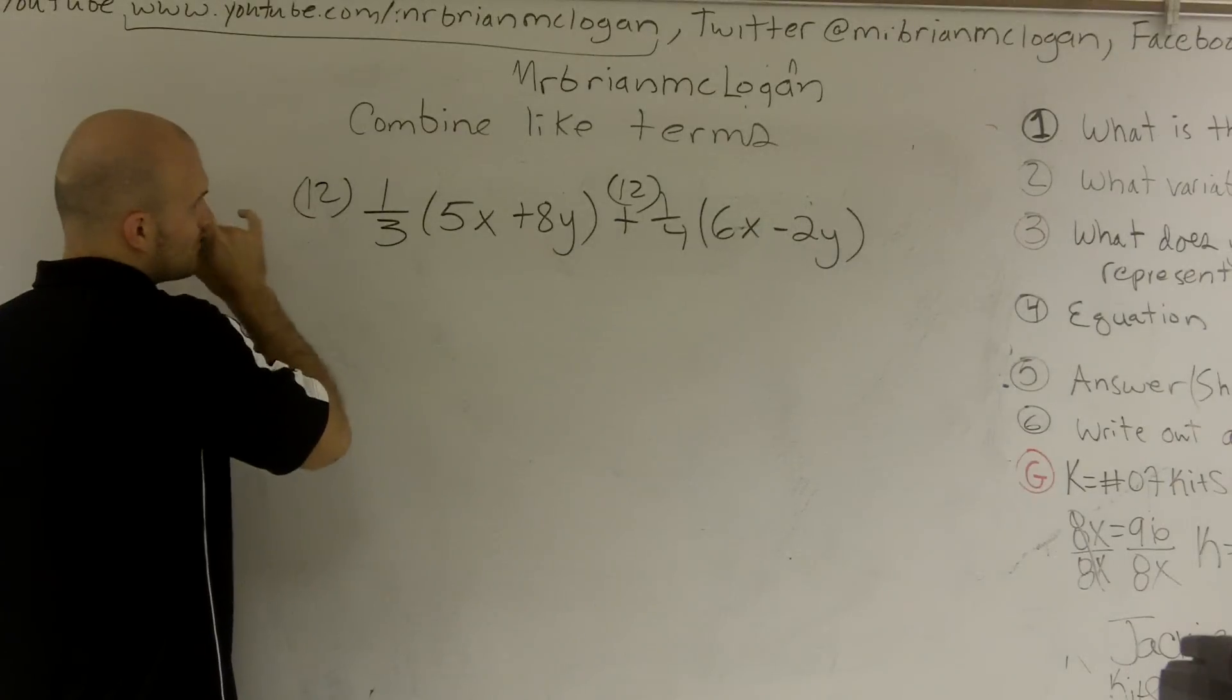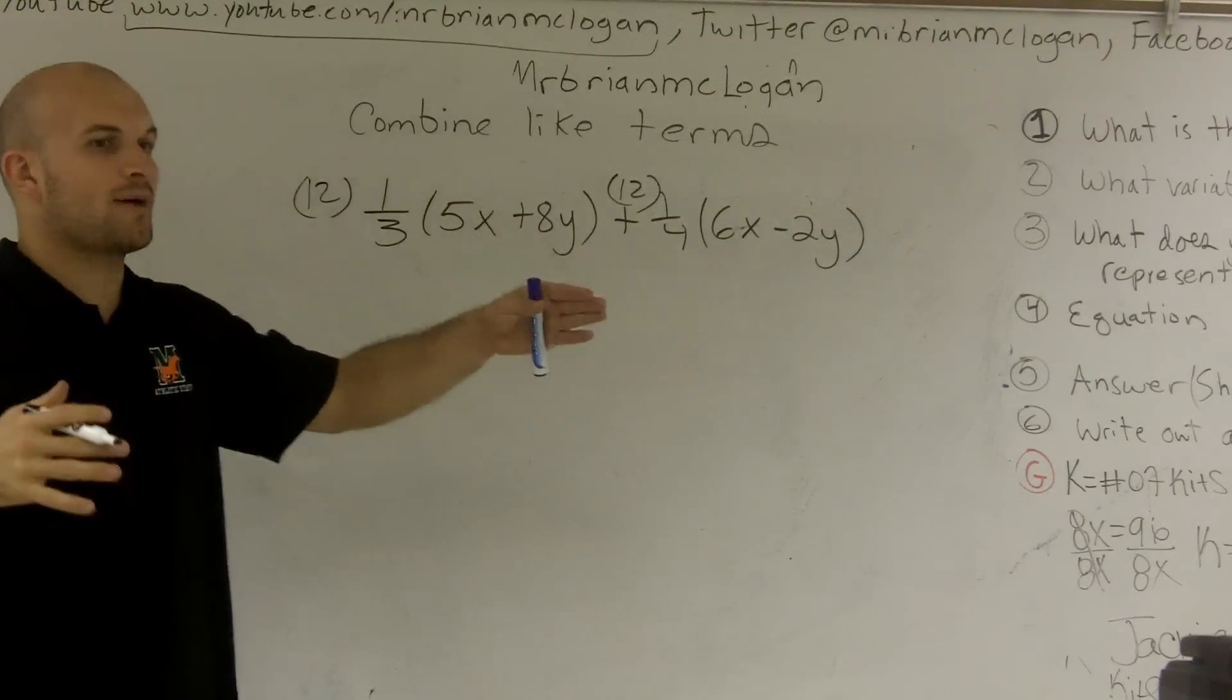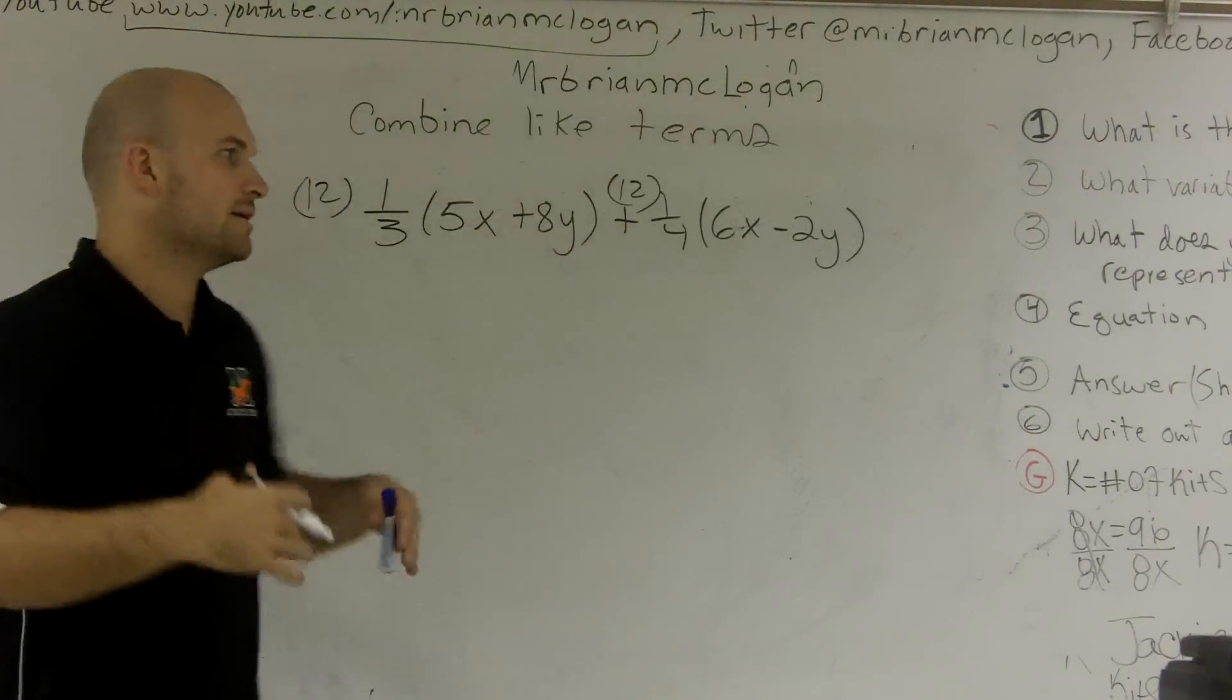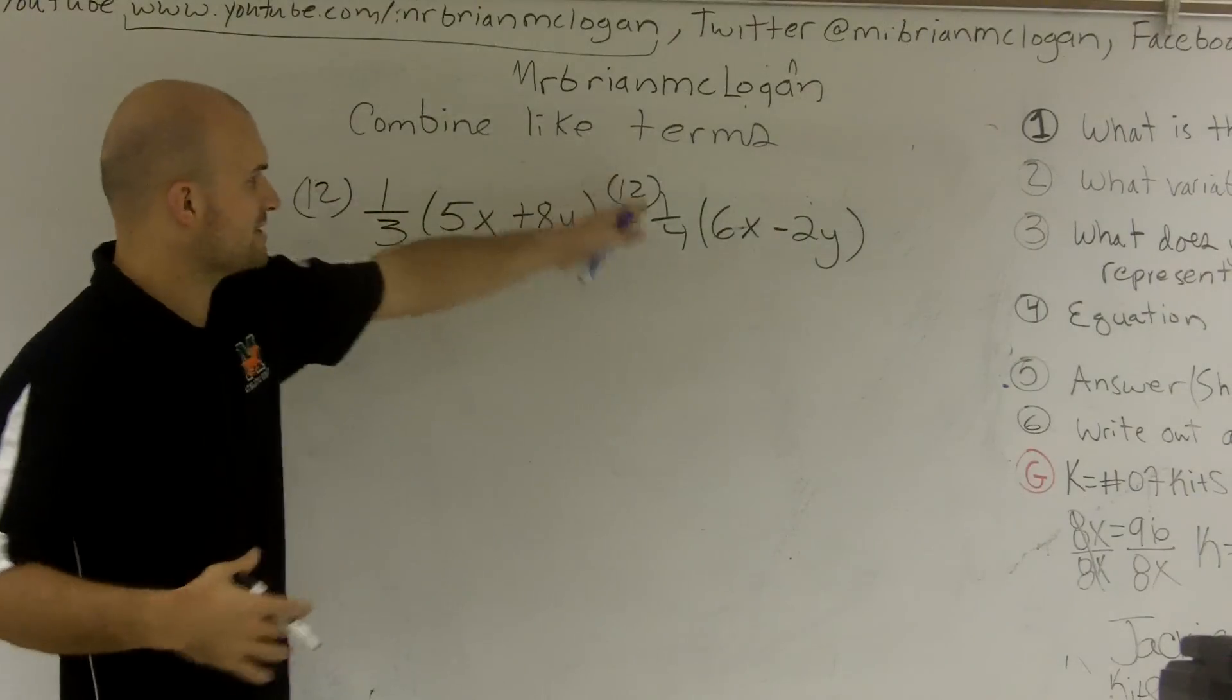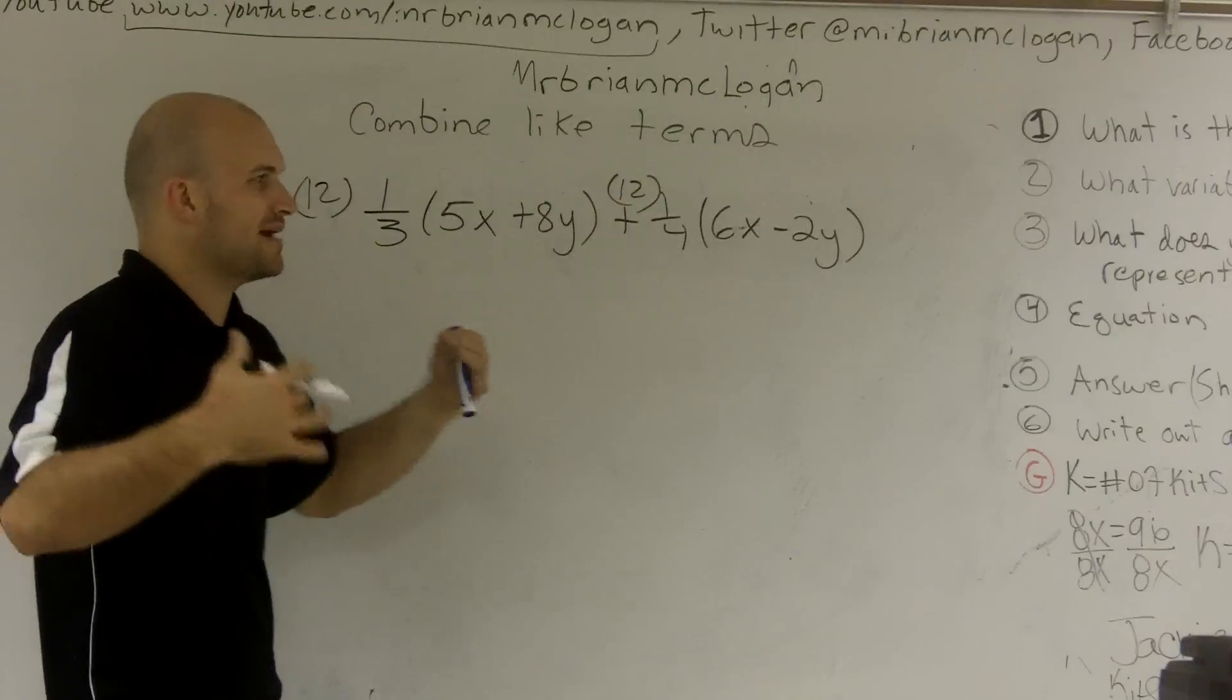By doing this, I'm multiplying this whole problem by a multiple of 12. If you multiply this by 3 and this by 4, you're actually changing your problem. You don't want to do that. You've got to multiply everything together by the same number.